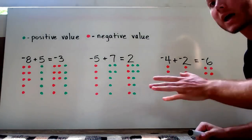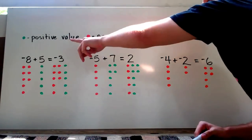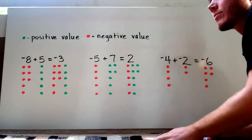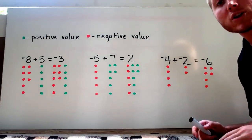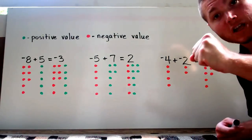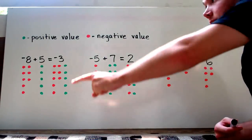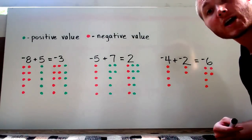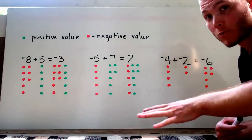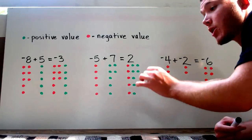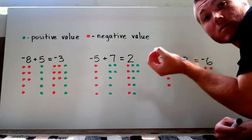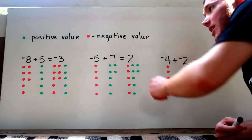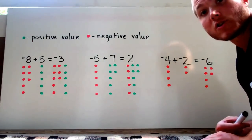Again, these mean the exact same thing. If you want to use solid black dots for the positive values, you can do that. I would recommend using open white dots for the negative values.